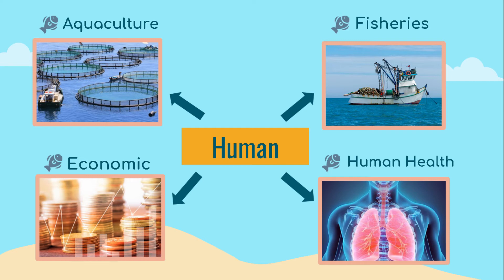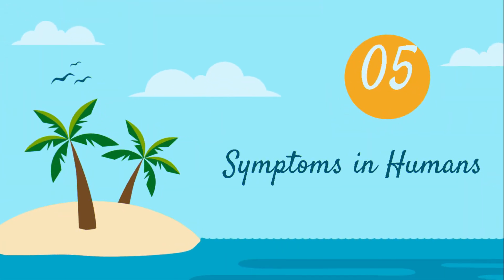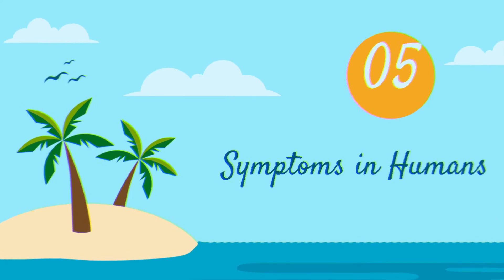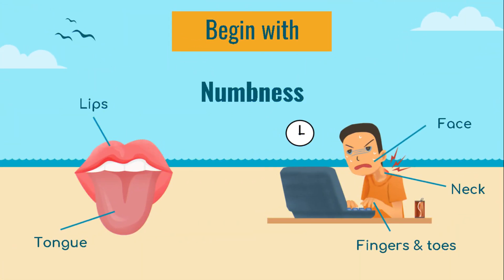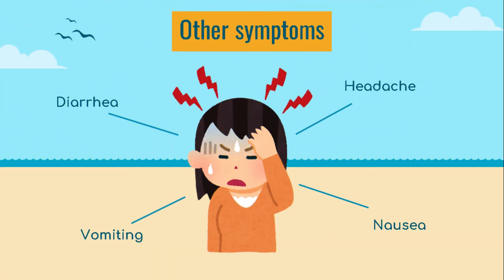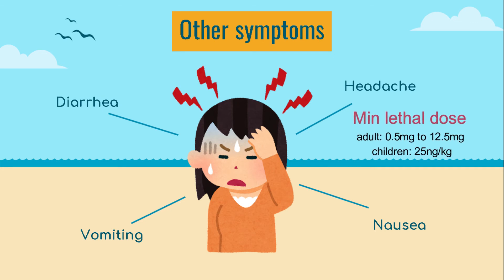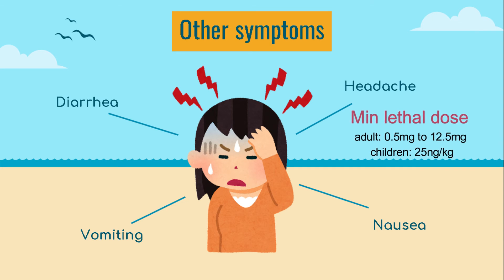The effects of PSP towards humans vary from common syndromes to fatal cases. Symptoms can appear within a few minutes of ingestion and can last up to a few days or weeks. It starts with tingling or numbness of the tongue and lips, spreading to the face, neck, fingers, and toes. Headache, nausea, vomiting, and diarrhea are also common symptoms. Severe and even fatal cases can occur if the dose of the toxin is too high. The minimum lethal dose for adults is 0.5 mg to 12.5 mg, while in children it is 25 μg per kilogram.